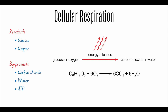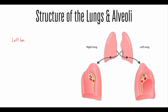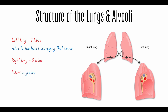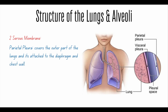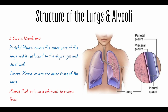Finally, let's talk about the structure of the lungs. We have two lungs: the left lung has two lobes, while the right lung has three lobes. The lungs have a groove called the hilum, which provides access for pulmonary vessels, nerves, and lymphatics. Additionally, the lungs have two serous membranes called pleura. The parietal pleura covers the outer part of the lungs and is attached to the chest wall and diaphragm. The visceral pleura covers the inner linings of the lung — whenever you see 'visceral,' it means attached to the organ. Between both pleuras lies the pleural cavity, where pleural fluid acts as a lubricant to reduce friction.